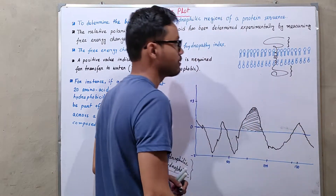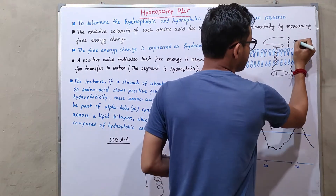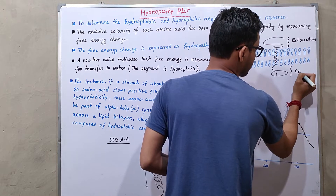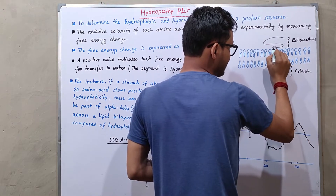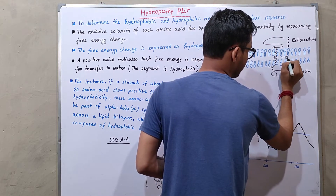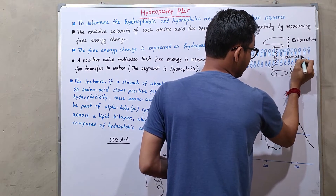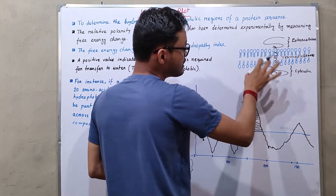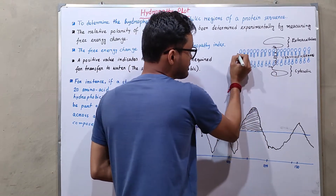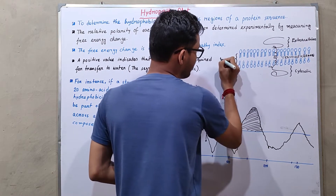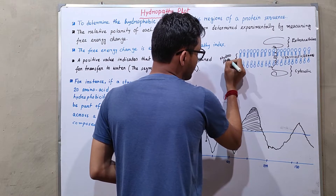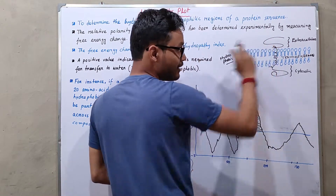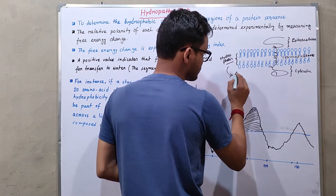A transmembrane protein has three distinguished segments: one is the extracellular segment, another is the cytosolic portion, and the portion which spans the lipid bilayer is known as the transmembrane segment. Whenever a protein sequence crosses the lipid bilayer, that lipid bilayer portion is hydrophobic in nature. So the segment of the protein that crosses it should also be hydrophobic.